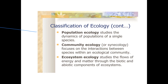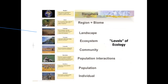Ecosystem ecology studies the flows of energy and matter through the biotic and abiotic components of the ecosystem. The levels of ecology start with the individual. A group of individuals forms a population; a group of populations interacting forms the community; different communities form an ecosystem. The next higher level is the landscape, then the biome, and finally the biosphere.